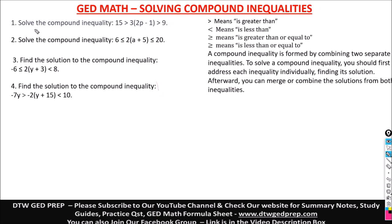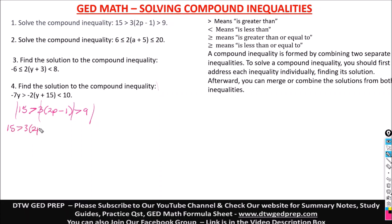So here we have to solve the compound inequality. We have 15 greater than 3 times the quantity 2p minus 1, greater than 9. What you do is separate them into two. The middle expression goes to the left side and also to the right side — it's like you are dividing the middle one between 15 and 9.